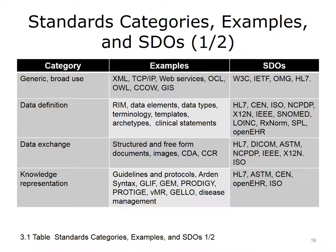This slide and the next summarize the category of standards, give examples, and name some of the SDOs creating those standards. In the generic use category, OCL is Object Constraint Language, which is a language to constrain information models related to such attributes as data characteristics, linkages, or use. OWL is Web Ontology Language, and GIS is Geographic Information System or Geocoding Standards. These groupings will be discussed throughout this component.